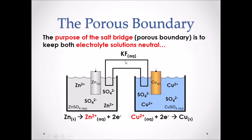The porous boundary — this is the salt bridge, which connects the two beakers of the half reactions. The purpose of the salt bridge is to keep both electrolyte solutions neutral, so they don't affect the transfer of electrons from the anode to the cathode. If this cell operates for an extended period of time, we see a buildup of Zn²⁺ ions in the anode solution, because the anode is breaking down into ions and releasing electrons, making that solution more positive due to more cations.